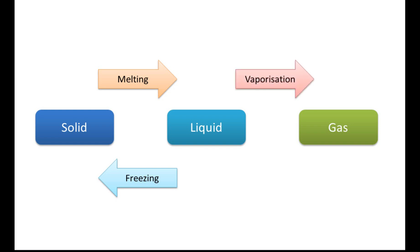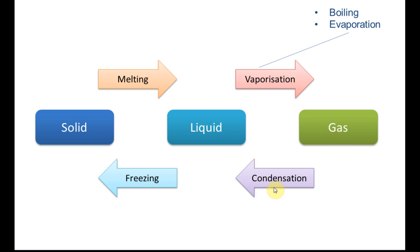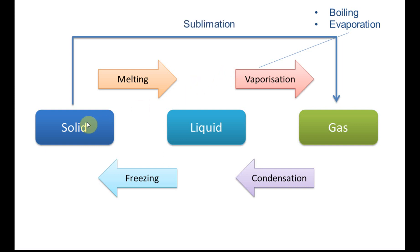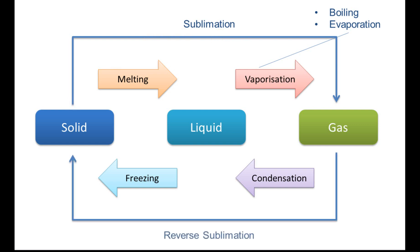Liquid to gas is called vaporization, which has two types: boiling and evaporation. Gas to liquid is called condensation. Sometimes a solid can change directly to gas — this is called sublimation. Gas can also change directly back to solid, which is called reverse sublimation. Both processes can be referred to as sublimation, though some books distinguish them by calling the gas-to-solid direction reverse sublimation.